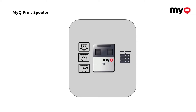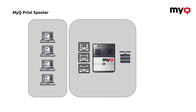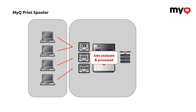Now, how does the printing work and why this spooler is so unique? When it comes to the printing, all the incoming print jobs go normally directly into these LPR, IPPS or RAW ports on which the server listens. Once the job is received by any of these ports, it goes directly to the MyQ server where the jobs are analyzed and processed.